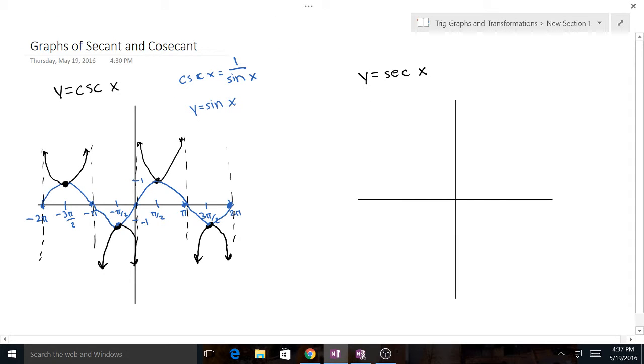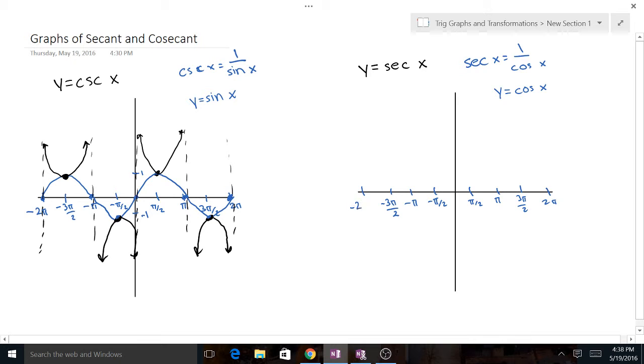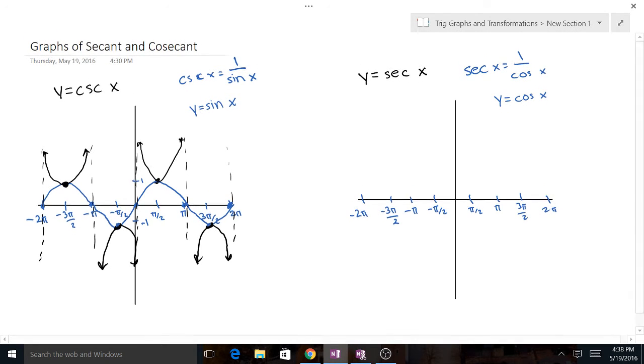Then we're going to follow a very similar process for y equals secant of x. Let's start by doing, well, secant of x equals 1 over cosine x. So we're going to start by doing y equals cosine x. Start with that graph. And again, we're going to have the same pi over 2 pi, 3 pi over 2, 2 pi. Same thing back here. Just everything negative. And even when we're doing transformations and stuff with cosecant and secant, I would still recommend that you do the transformations first with the sine and cosine, and then just draw the asymptotes. And that will still make it easier.